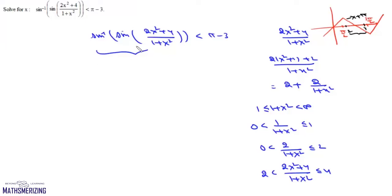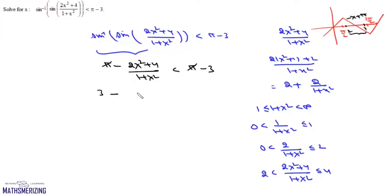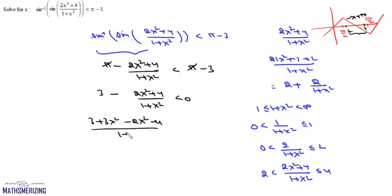So we can write sin⁻¹(sin((2x² + 4)/(1 + x²))) as π − (2x² + 4)/(1 + x²), and this should be less than π − 3. Cancelling π from both sides, we get 3 − (2x² + 4)/(1 + x²) < 0, which becomes (3(1 + x²) − 2x² − 4)/(1 + x²) < 0, simplifying to (x² − 1)/(x² + 1) < 0.